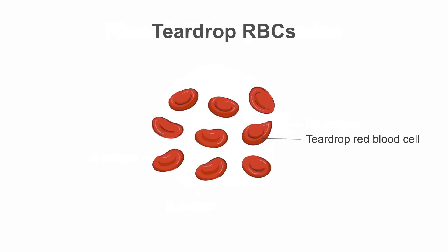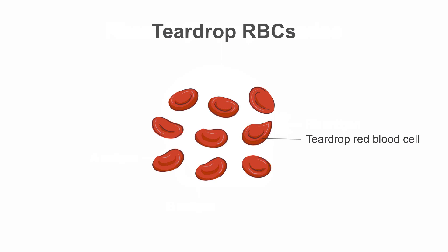The presence of teardrop red cells may imply bone marrow infiltration, for example due to bone marrow fibrosis called myelofibrosis. In such cases, there may also be immature red cells and white cells in the circulation. This condition is called leukoerythroblastic blood picture.